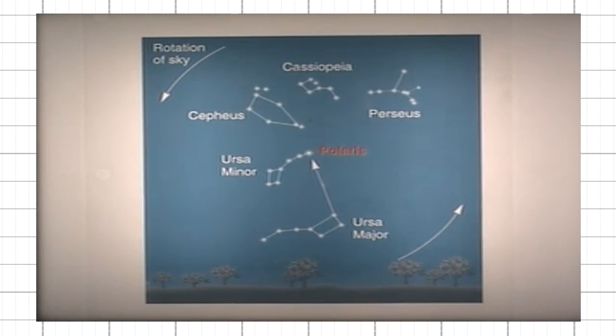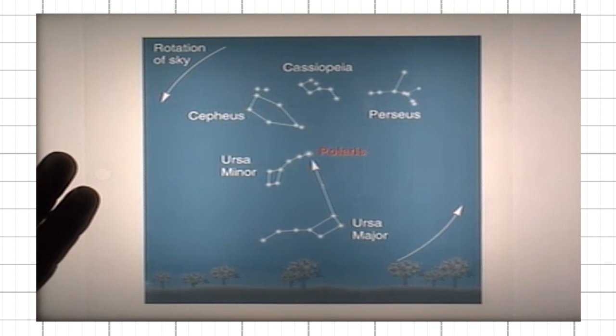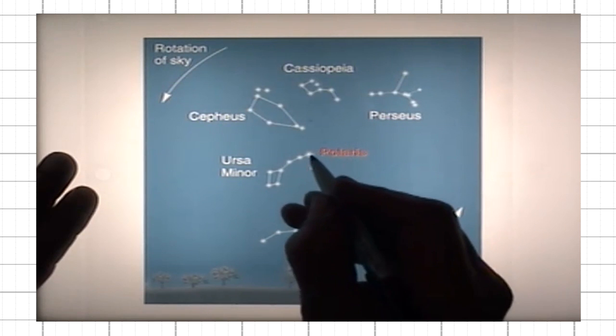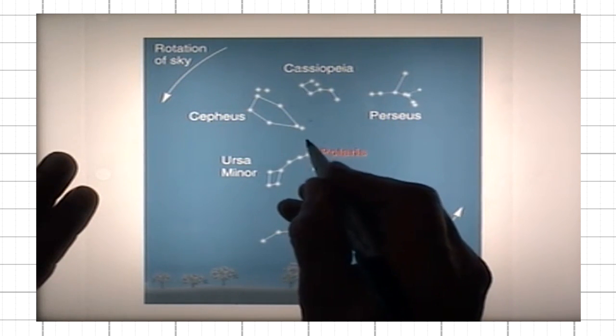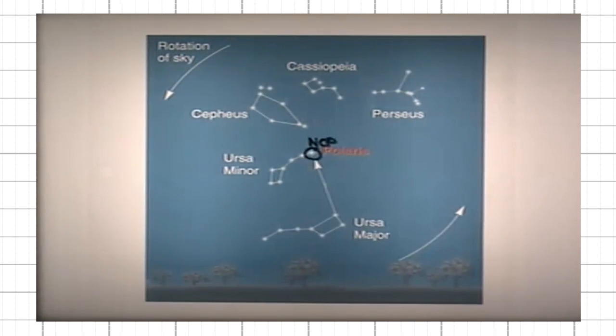Let me explain. This diagram illustrates what we see in the northern hemisphere. Here is Polaris, which marks the location of North Celestial Pole. That's the point on the Celestial Sphere directly above the Earth's North Pole.